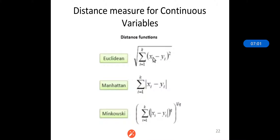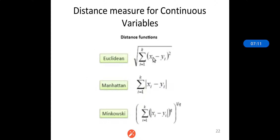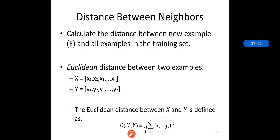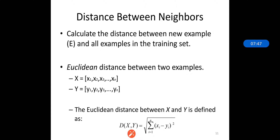These are the various distance measures for continuous variables, which we have already seen in our last sections. For distance measure in KNN, Euclidean, Manhattan, or Minkowski distance measures are used. The distance between neighbors is calculated by the Euclidean distance: d(x,y) = √(Σᵢ₌₁ⁿ (xᵢ − yᵢ)²). In the KNN algorithm, all instances correspond to points in an n-dimensional feature space.